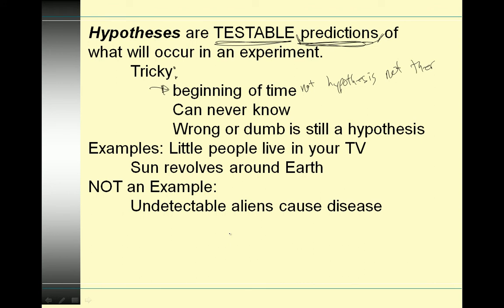Something you can never know — like 'do you know what I'm thinking?' — doesn't work as a hypothesis. If something is wrong or dumb, it is still a hypothesis. My hypothesis is that the sun is made of bologna. Just because it's dumb doesn't mean it's not testable. Little people live in your TV — that is a hypothesis. You can take apart your TV and look for them. 'The sun revolves around the Earth' is a hypothesis — it is testable. 'This disease is caused by undetectable little aliens that sneak into your skin' — if it's undetectable, we cannot test for it, so it's not a hypothesis.